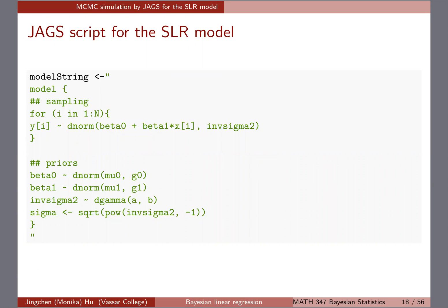Just check with your neighbor really quick to convince yourself that the loop makes sense to you, and also that the priors we're giving are consistent with what we've been talking about. It's probably even simpler than the hierarchical model script we did before — there are no nested loops for multiple levels.